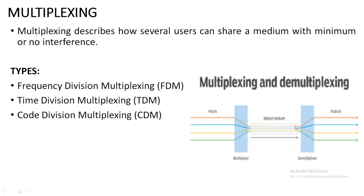In this diagram you can see the multiplexing side and the demultiplexing side. At the multiplexing side, multiple signals are coming in and combined to share a common medium. Once they reach the destination, a demultiplexer divides all the signals and gives different outputs. So multiplexing is nothing but combining multiple signals together to share a common medium.